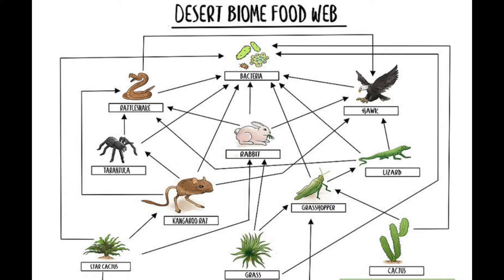When each of these different organisms eventually dies and becomes dead organic material, the different bacteria within this desert biome are going to consume that dead material in order to get energy. Decomposers are a very important part of food webs, and that is why bacteria is placed in a position where every single organism is connected to it.